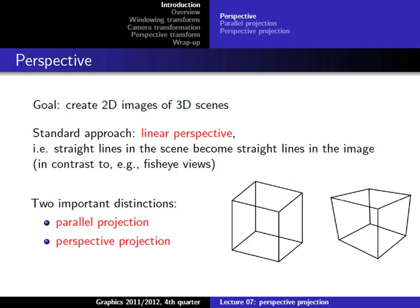We can distinguish between different kinds of linear perspective — most importantly between parallel projection and perspective projection. The difference should become clear immediately when you look at these two images. On the left side we have parallel projection, where all the lines that were parallel in the original image are also parallel in the projected image. On the right side there are some changes because we are considering the perspective of the observer of that scene.